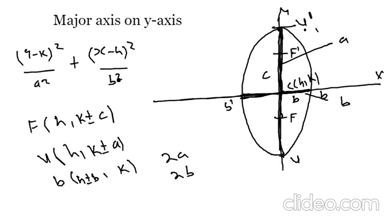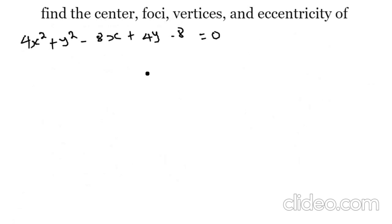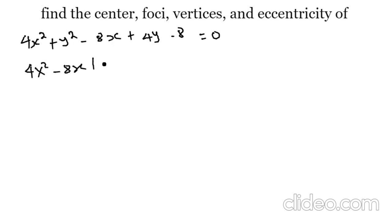Let's take a look at this example: Find the center and focal points. The equation is 4x squared plus y squared minus 8x plus 4y minus 8 equals zero. We need to find the center, focus, and city. We rearrange: 4x squared minus 8x plus y squared plus 4y equals 8.